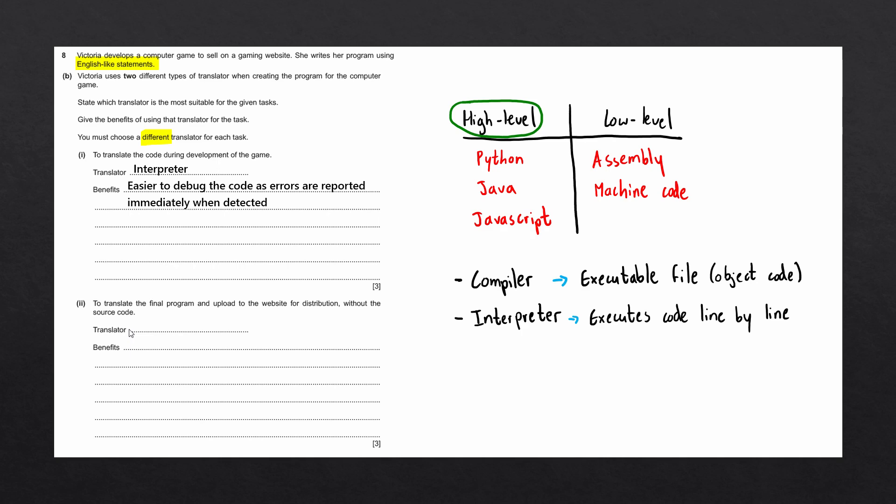That means the answer to the second statement is going to be a compiler. They've told us that the program is going to be uploaded to a website for distribution without the source code. A compiler creates an executable file that does not contain the source code. This is beneficial, as it means that other people will not be able to steal the source code and can only run the executable file. Let's write that down for the benefits: creates an executable file, meaning the source code cannot be stolen. And there we go, that is that question completed.